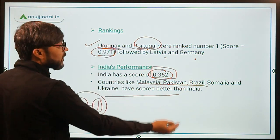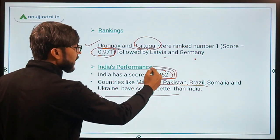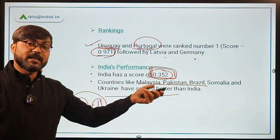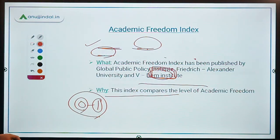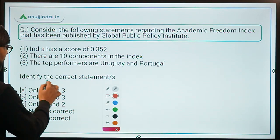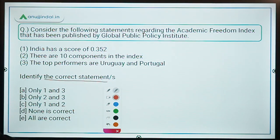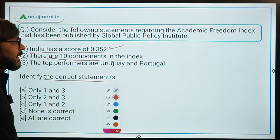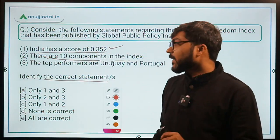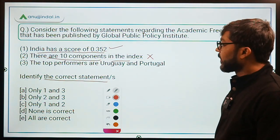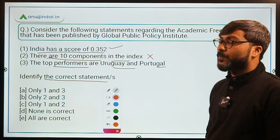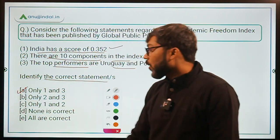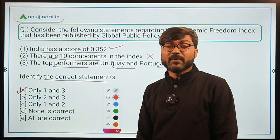Uruguay and Portugal have the maximum score of 0.971, while India scores 0.352, which is lower than countries like Pakistan, Brazil, Somalia, and Malaysia. Now coming back to the question: we have to identify the correct statements. Statement 1 — India has a score of 0.352 — is correct. Statement 2 — there are 10 components — is incorrect; there are 8 components. Statement 3 — the top performers are Uruguay and Portugal — is correct. Therefore, Option A (only 1 and 3) is the correct answer.